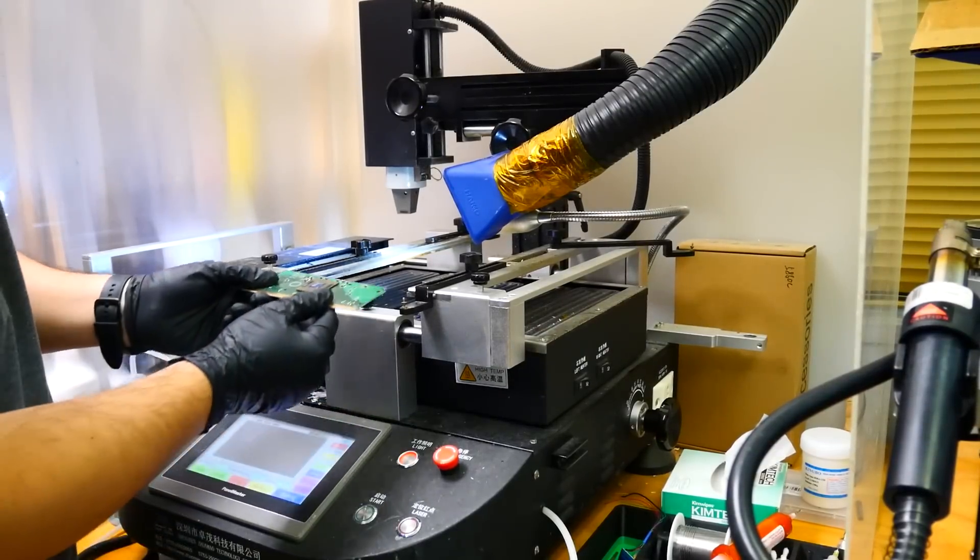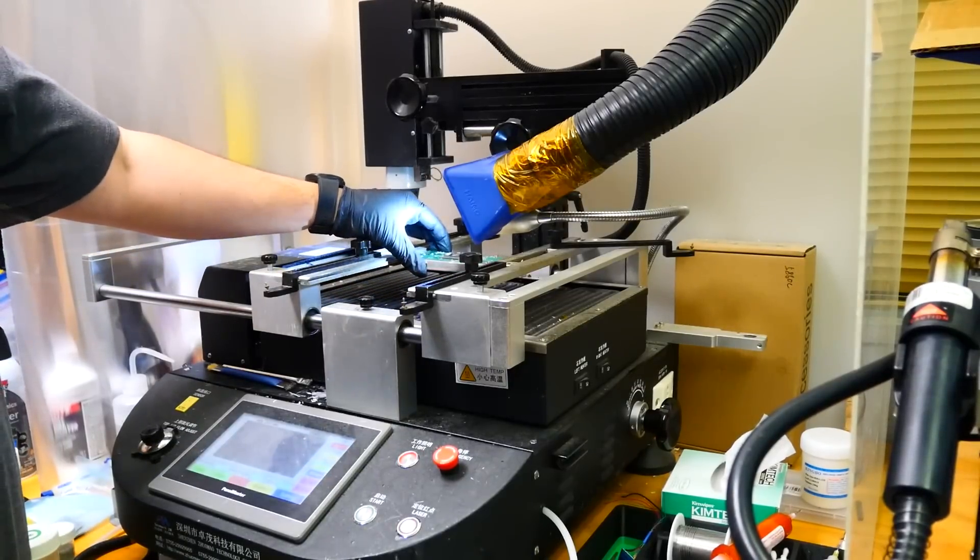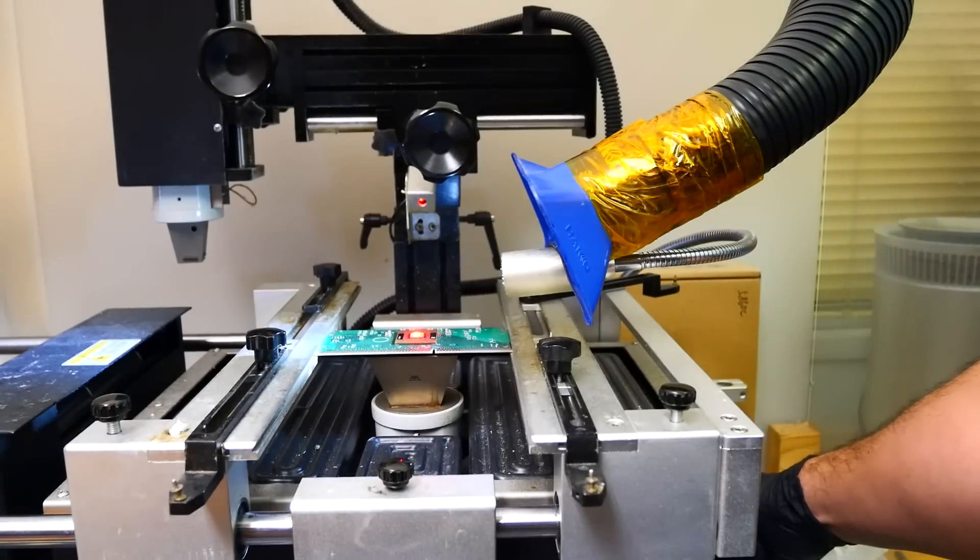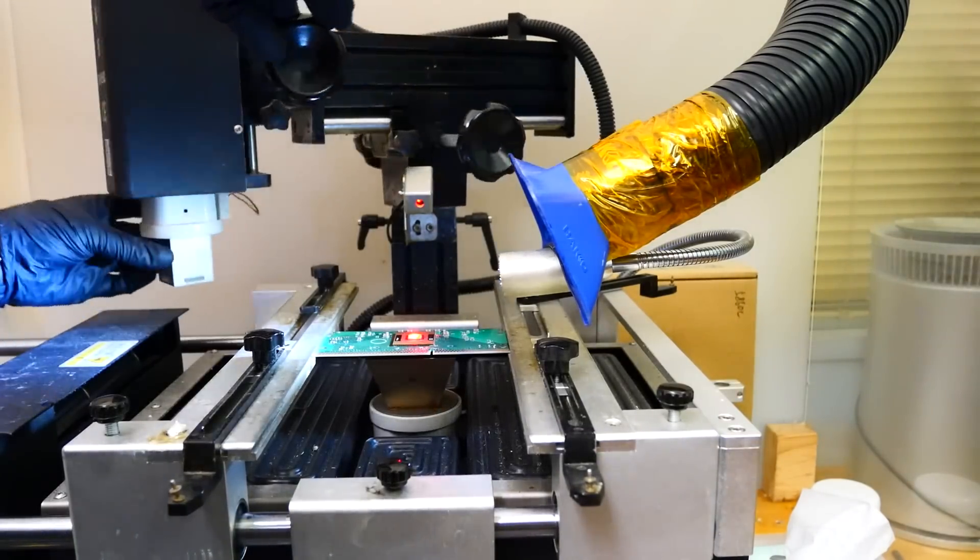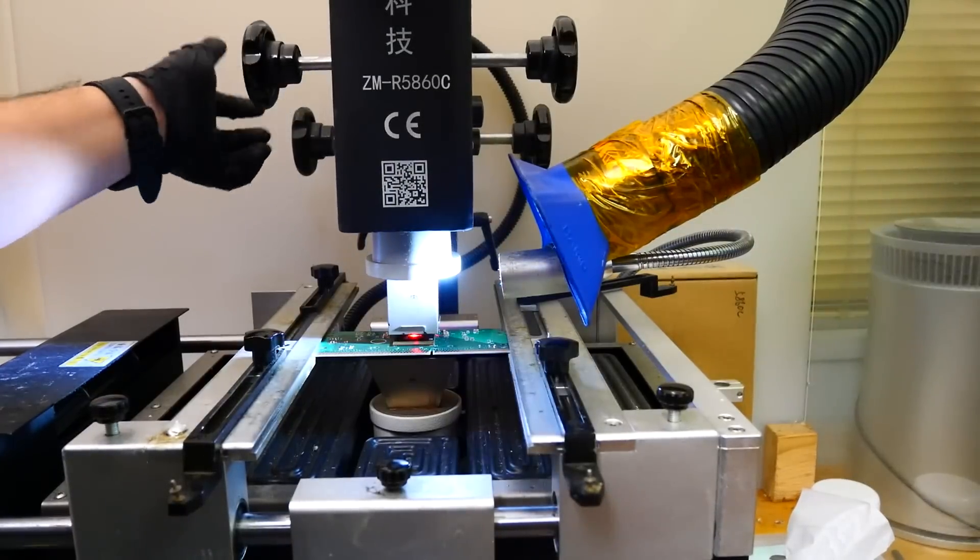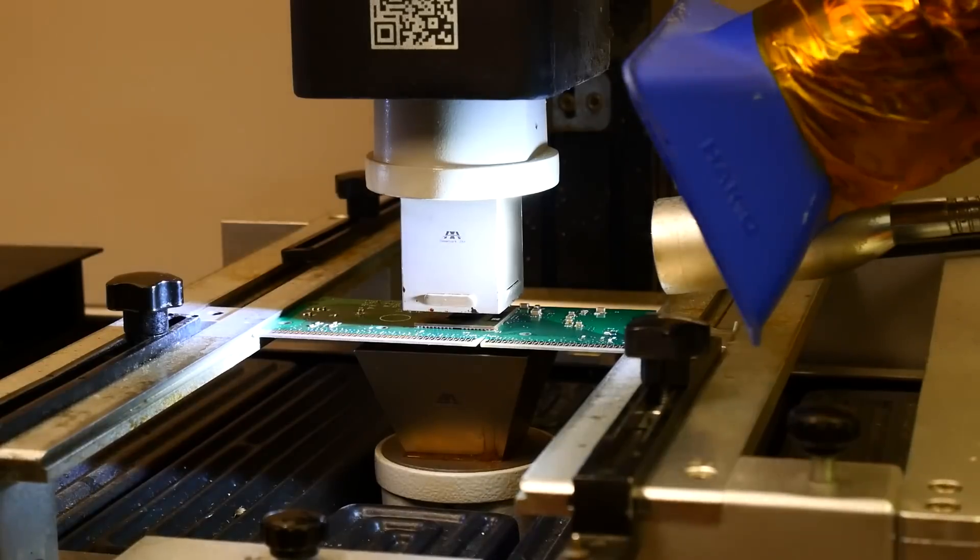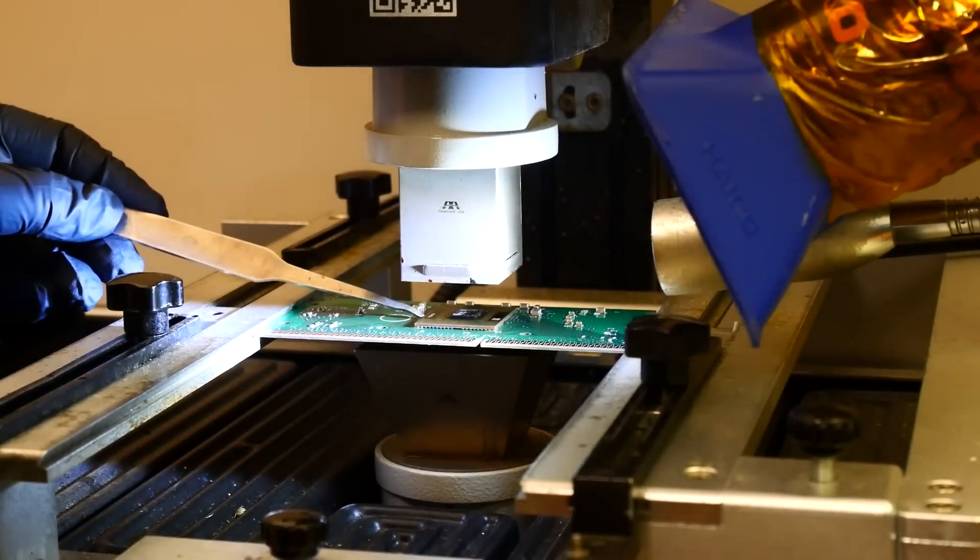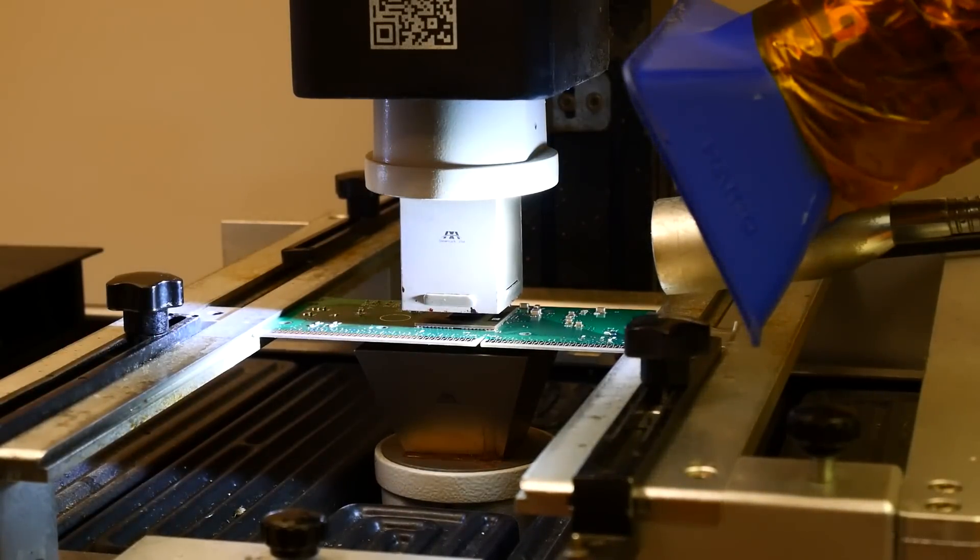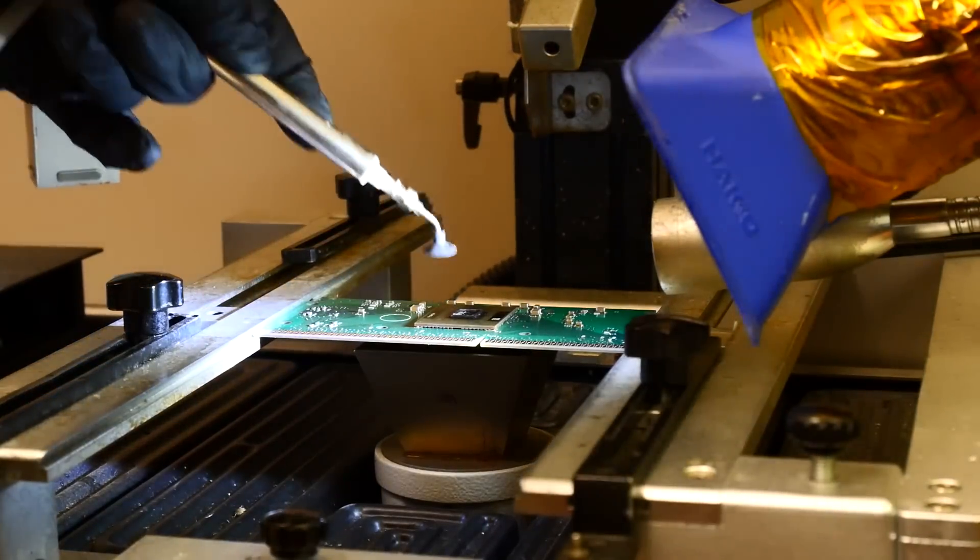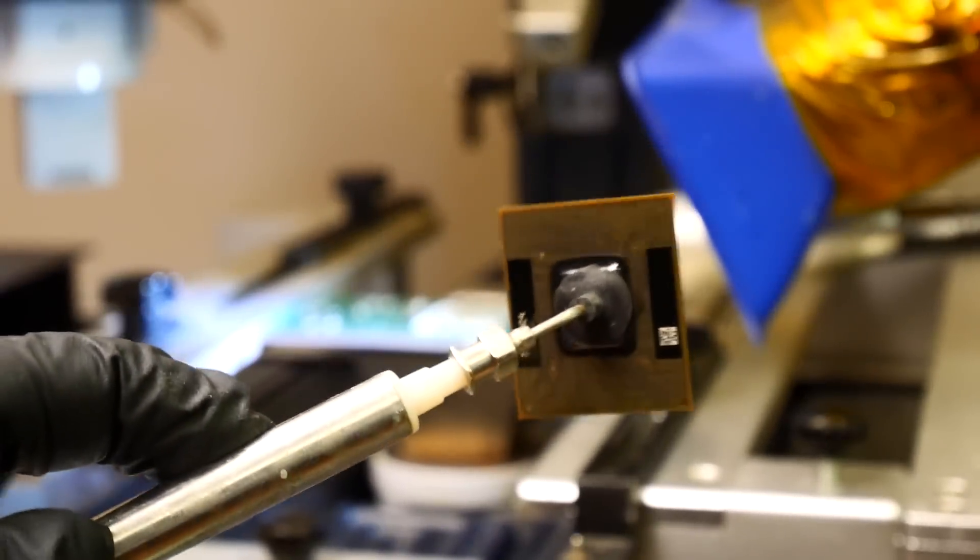We're going to go ahead and put this in our BGA machine and we will begin the process of removing the BGA. And now we wait to check and see if we're at temperature. We are. Looks like we're at temperature, so let's go ahead and remove the BGA. And there you have it. It is removed.